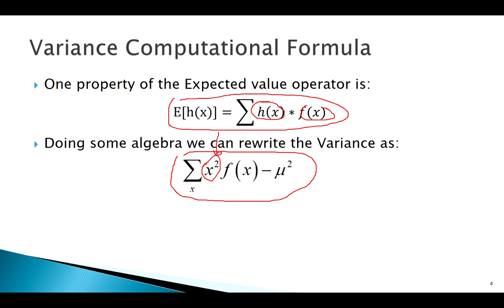If I think about this as a function, this is essentially x² times f(x), which is the expected value not of x but the expected value of x². So we can rewrite the variance as E[X²] - E[X]².